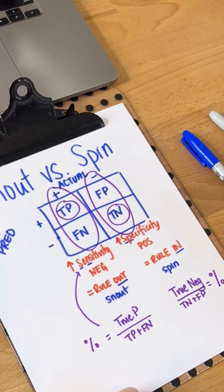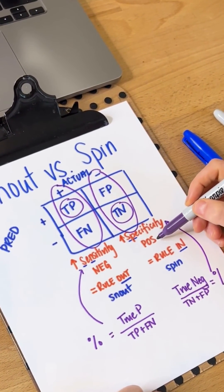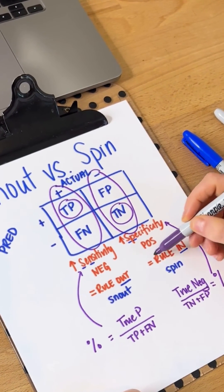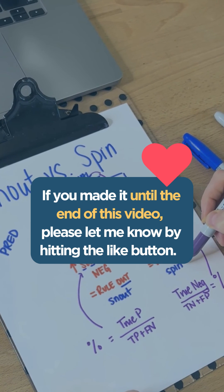From there, that'll give us a percentage. And that percentage, if it's really high and they get a positive, then we know that this has a strong ability to rule in that pathology.